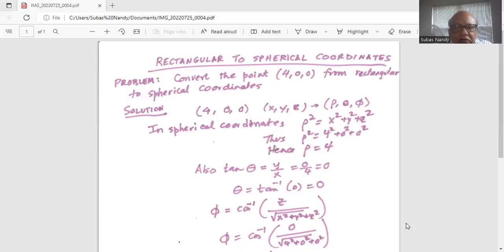Now rho square is equal to x square plus y square plus z square. So rho square equals 4 square plus 0 square plus 0 square. Thus rho is equal to 4.